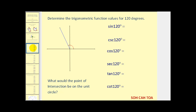Let's determine the six trigonometric values for 120 degrees. We form our reference triangle by drawing a segment to the closest part of the x-axis. The reference angle is 60 degrees, which makes the other angle 30 degrees — so this is a 30-60-90 triangle. The sides are one, two, and square root of three. The only catch is that the x-coordinate of the point is negative one, so we label it as negative one, while the y-coordinate is positive square root of three.